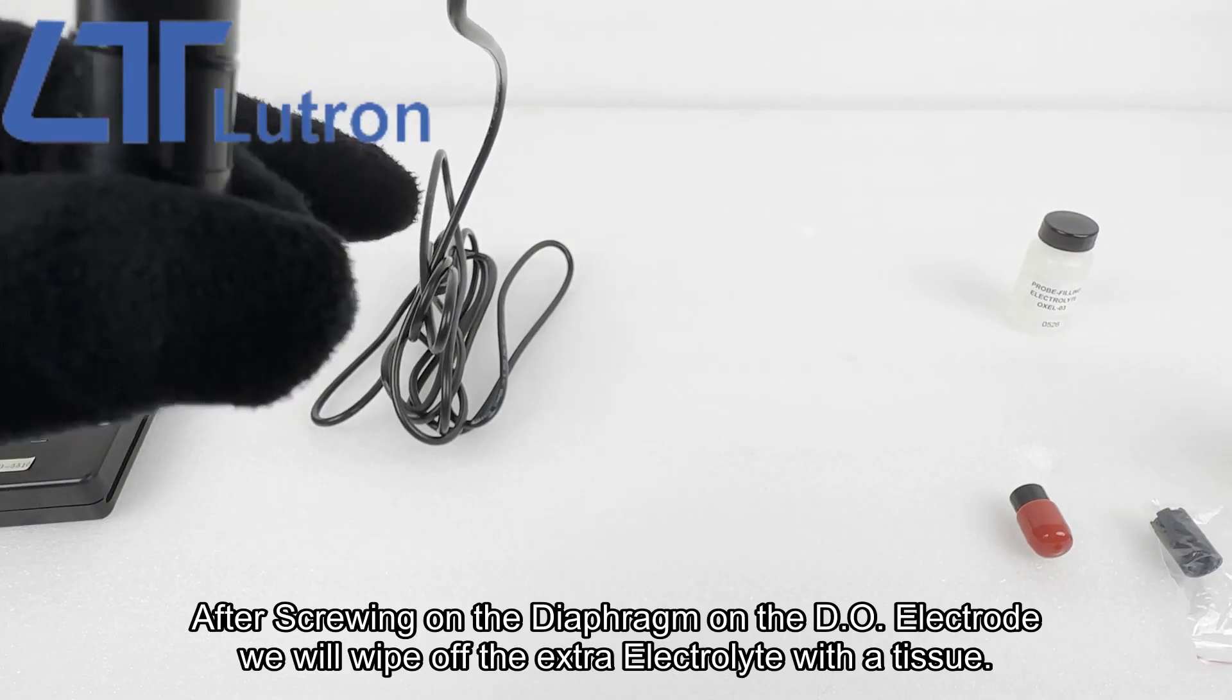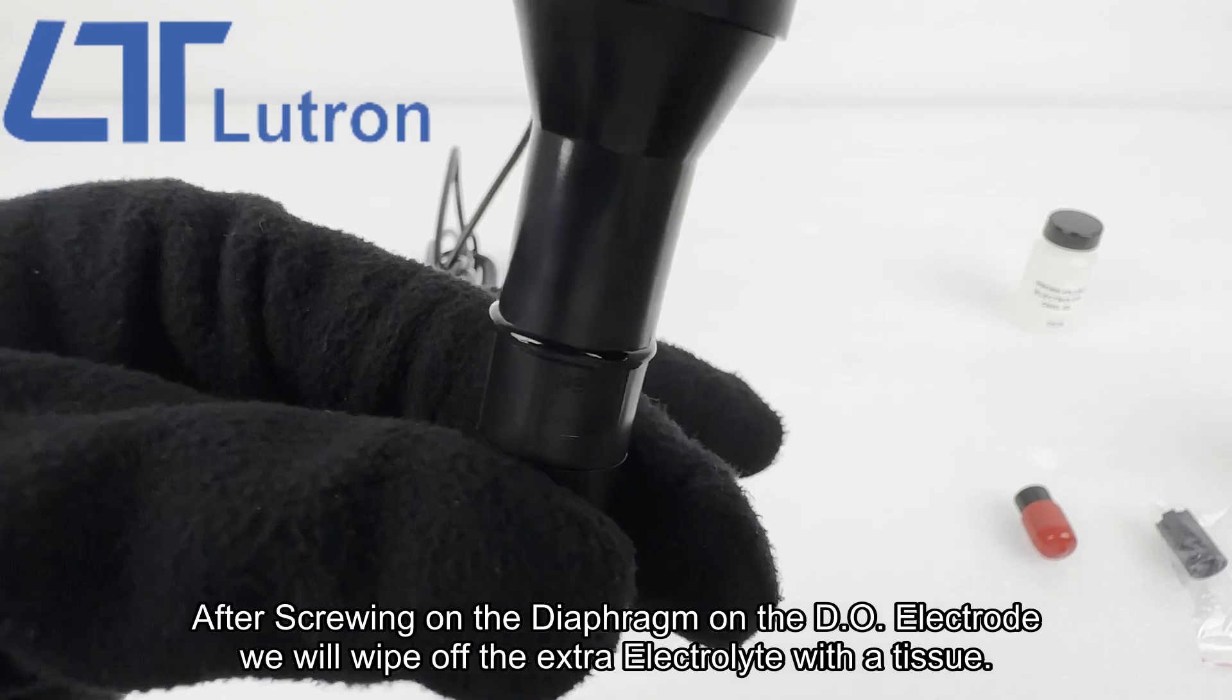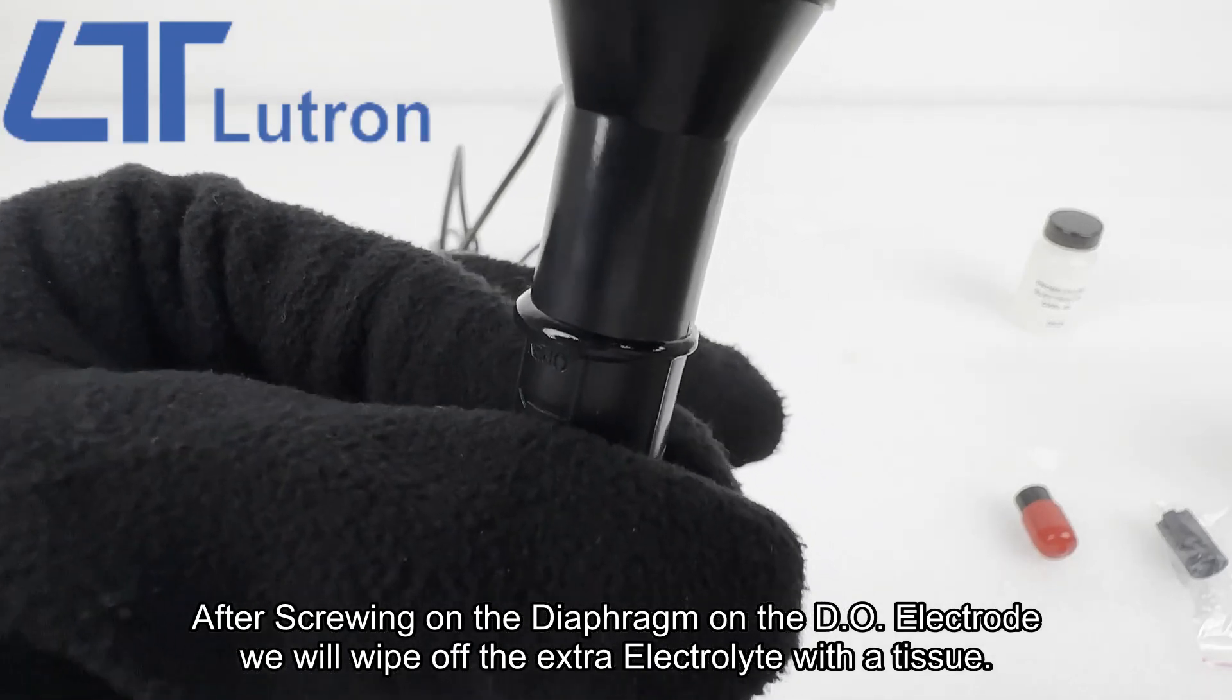After screwing on the diaphragm on the DO electrode, we will wipe off the extra electrolyte with the tissue.